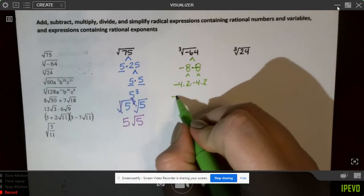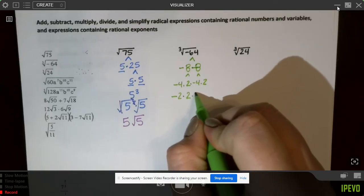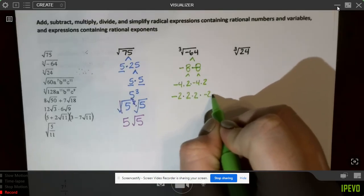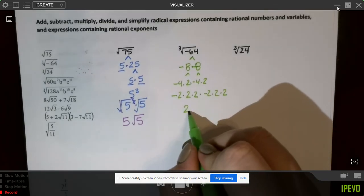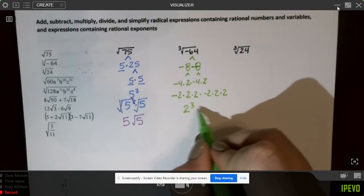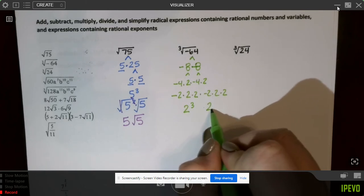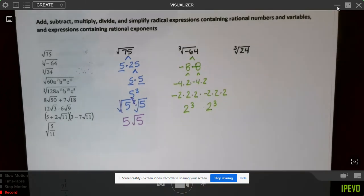or yeah, negative 2 times 2 times 2 times negative 2 times 2 times 2, all of those things. So you'll notice we've got two sets of 3 2s. There's two of those.